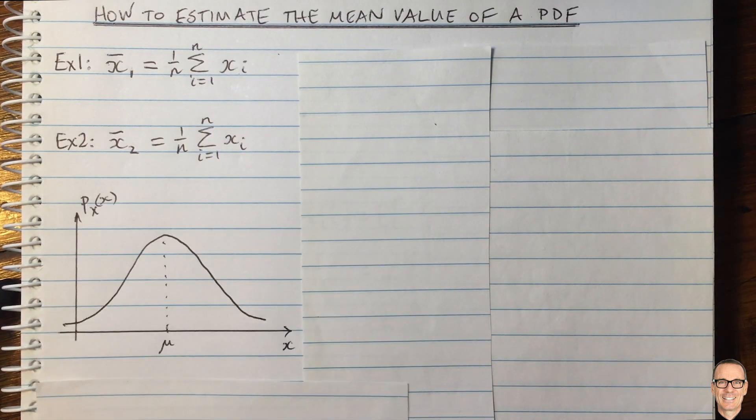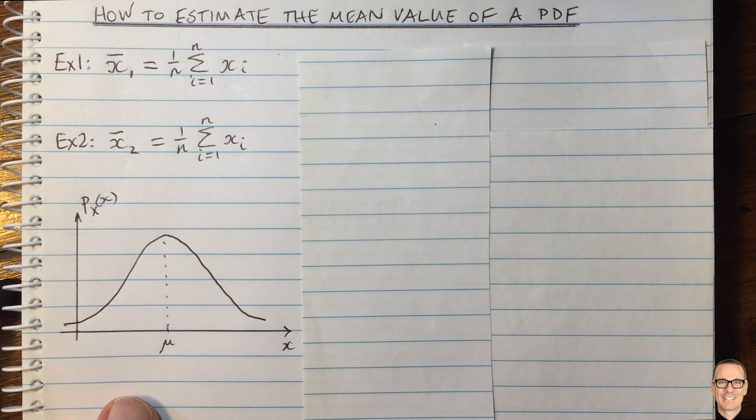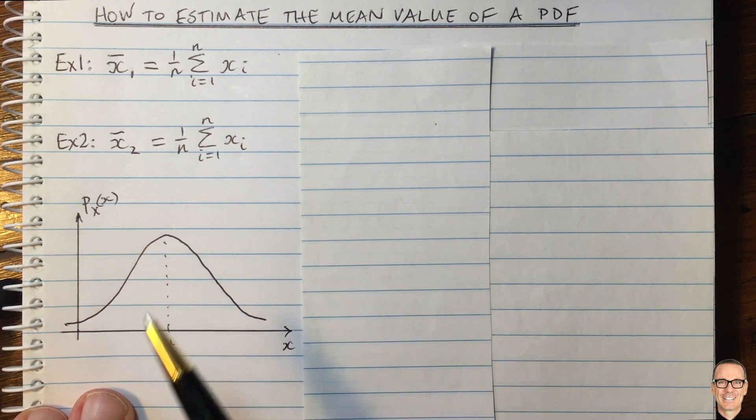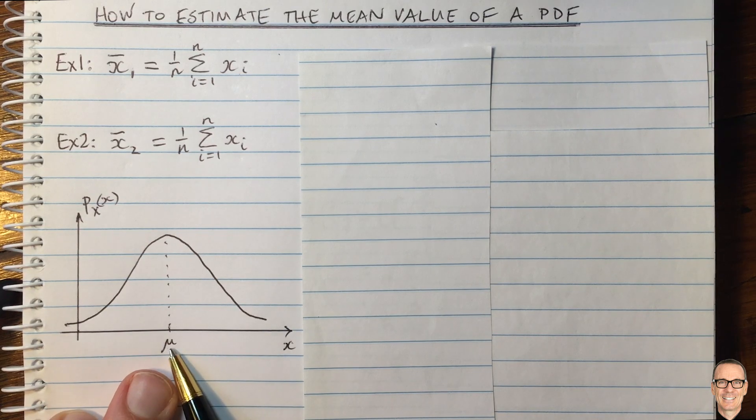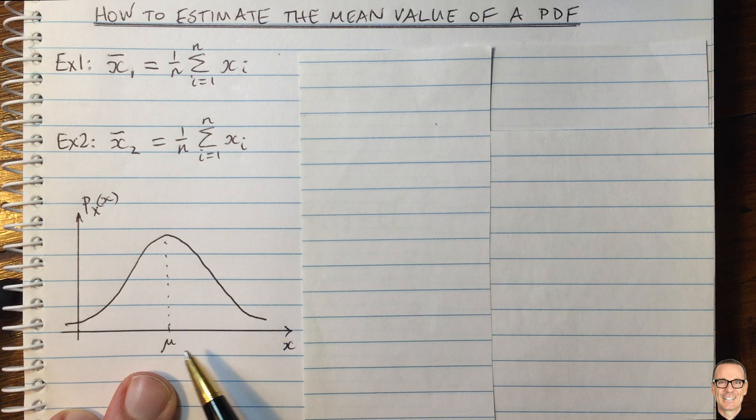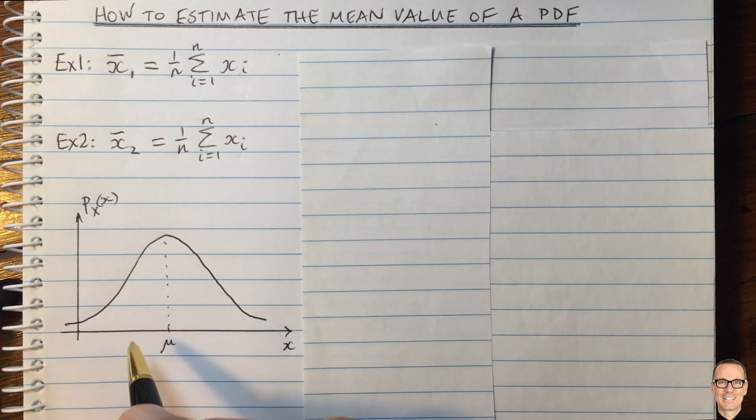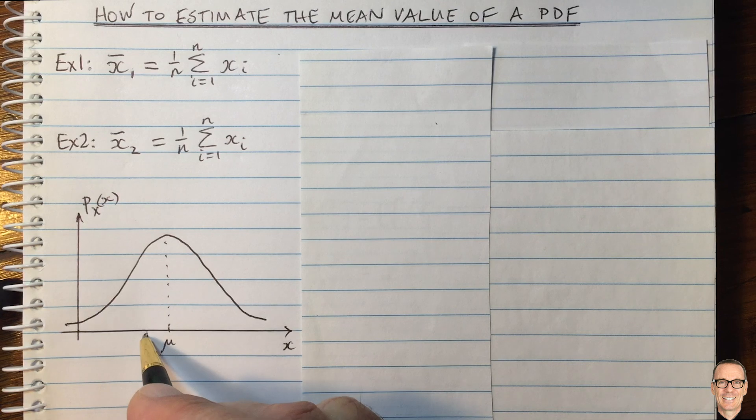Let's think about what this looks like on the probability density function diagram. So here's an example of a probability density function, and I'm showing the mean, which we often use mu for. I've drawn it like a bell-shaped curve here, but it could be any function here. And then we think, where are these values? Well, x1 might be here, for example.